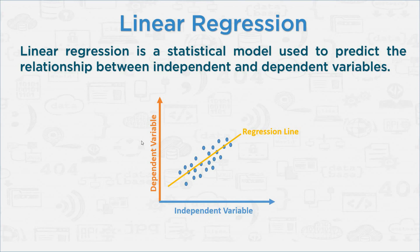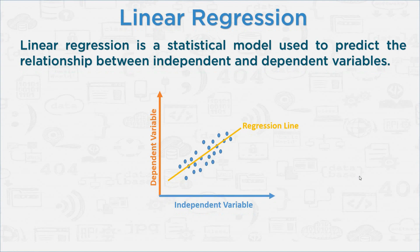Welcome back. In this part we are going to explore linear regression. Linear regression is a statistical model used to predict the relationship between independent and dependent variables. In the x-axis we have the independent variable and in the y-axis we have the dependent variable. The line between the data points is the regression line.